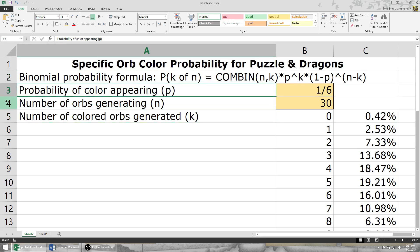We have three variables to work with. First is the probability of the color appearing, which is represented by P. Let's say, for example, we want to know the probability of a light orb appearing. We have six different colors available: red, blue, green, purple, yellow, and pink. There's a one in six chance of yellow appearing.